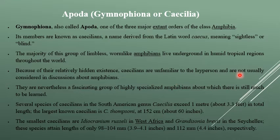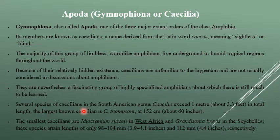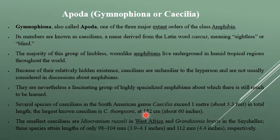Generally, limbs are not present in them. They are a very special, highly specialized group of amphibians. Several Caecilians in South America are among the largest of the genus — Caecilia thompsoni at 152 cm — while the smallest is Idiocranium russeli in West Africa, which is 3.9 to 4.5 cm.